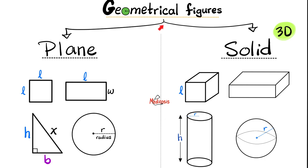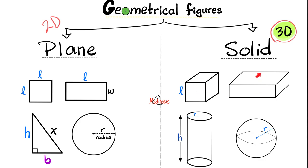Geometrical figures are divided into plane and solid — this is a very simplistic approach. Plane means two-dimensional, but solid means three-dimensional. Plane includes figures such as the square, the rectangle, the triangle, the circle, the rhombus, the parallelogram, etc. The solid is three-dimensional, which means you can pour water inside of it — it has depth, such as the cube and the cuboid.